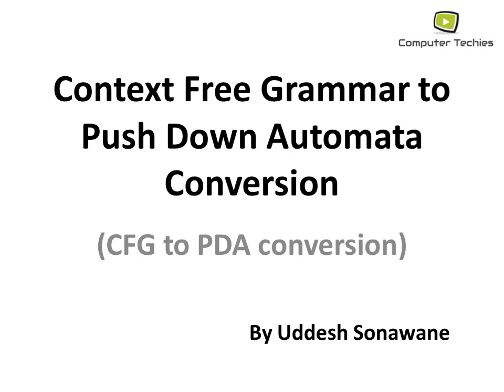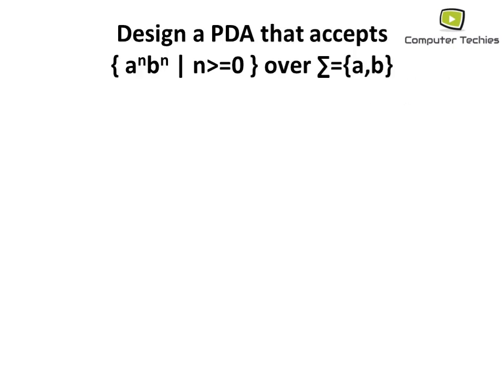Hello friends, myself Udesh, and today we will see about the conversion of context free grammar into pushdown automata, that is CFG to PDA. We will learn the concepts of conversion of CFG into PDA with the help of examples. The first example: design a PDA that accepts the language a^n b^n, where n is greater than or equal to 0, over alphabets a and b.